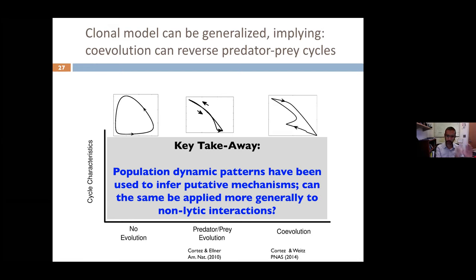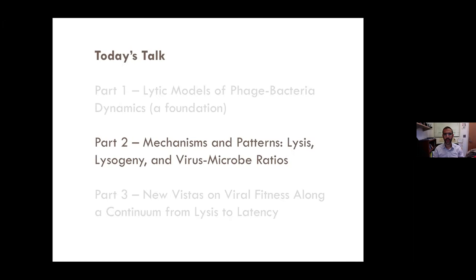The takeaway for today's lecture is that population dynamic patterns have been used to infer putative mechanisms — cryptic cycles in predator-prey or virus-microbe systems usually imply that evolution is occurring on the same time scale as population dynamics. But can we take this same approach more generally to non-lytic interactions? Let's change our perspective and think about non-lytic interactions.